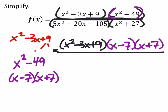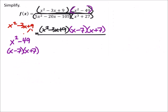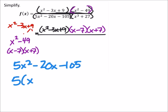Now we're just going to focus on the two terms in the denominator. Let's start with 5x² - 20x - 105. I can see right away that all three of those terms are divisible by 5. So if I factor out the 5 first, then I got x² - 4x - 21.